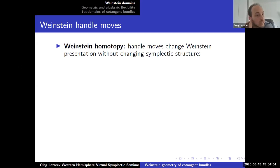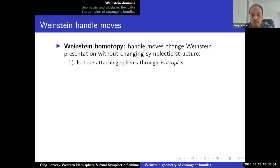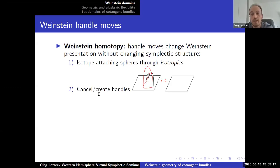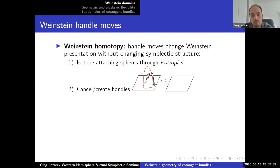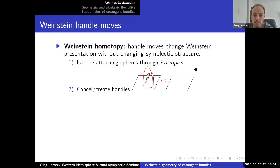So what are these moves? First, you can isotope the attaching spheres through isotropics — the attaching spheres are each isotropic, and any isotopy must be through isotropics. Another thing is you can cancel or create handles. Here I have a one-handle and a so-called canceling two-handle; the key feature is that the attaching sphere for the two-handle goes through the one-handle exactly once. You can collapse that half-disk, causing the two handles to cancel, and you can reverse the procedure to create two canceling handles.